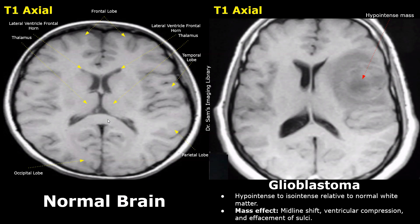For easier understanding, we will compare the glioblastoma images with images of the normal brain. These are images in the axial plane. In a T1 weighted image, tissues with high fat content appear bright while water-containing tissues appear dark. The lateral ventricles appear dark or hypo-intense because they contain cerebrospinal fluid. The inner white matter appears bright or hyper-intense because it has high myelin content, which is fat content, and the outer gray matter appears darker than the inner white matter. The gray matter has less fat content — it actually appears gray in T1 images. The bones appear black in T1 images with no MR signal.